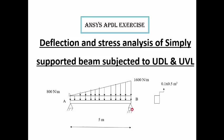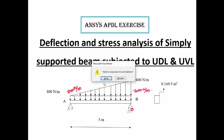The left end of the beam is subjected to 800 N per meter and the right end is subjected to 1600 N per meter. How to solve this problem using ANSYS APDL? The step-based procedure we are going to discuss.